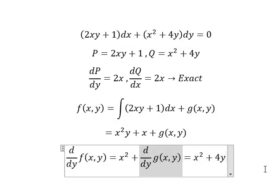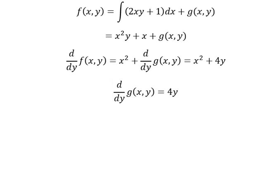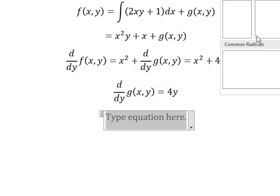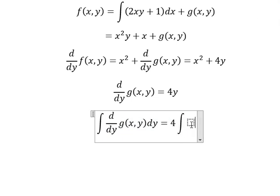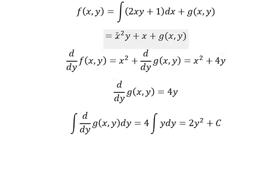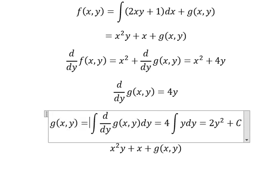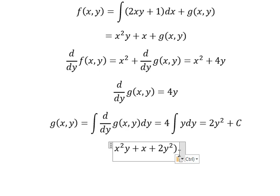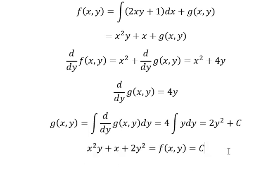Now we simplify for both sides. Next we need to integrate for both sides, and we have 2y squared plus C. Now we go back in here. The integral of this one gives us 3xy. So f(x,y) equals to 3xy, and we know that f(x,y) equals to C. Now we can simplify like this.